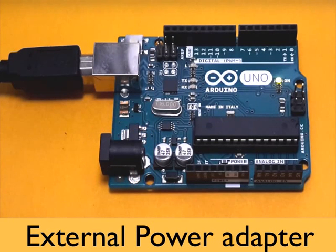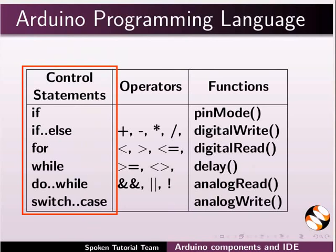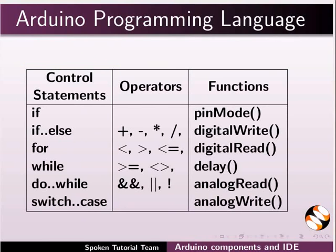Next, we will see about the Arduino programming language. Arduino programs can be divided into three main parts: Control Structure Statements, Operators, Variables and Constants, and Functions. The control statements are if, if-else, for, while, do-while, switch-case, etc. These are the same as in any programming language.